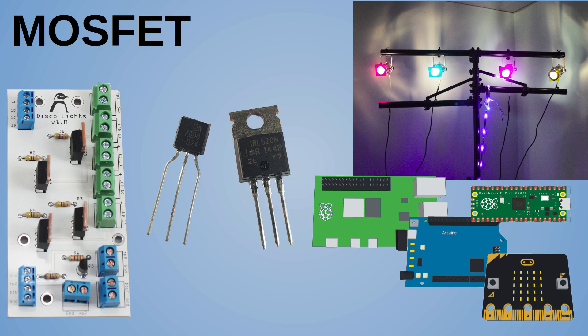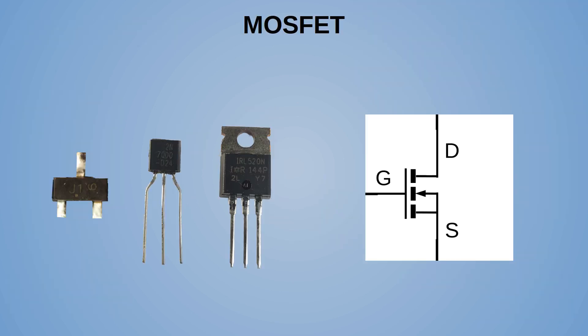The MOSFET and other FET technologies are more widely used than the bipolar transistor, both in integrated circuits and as a discrete component. In this video I'll give some example uses of the MOSFET and how it can be used as a digital switch to turn on large loads. This shows some example MOSFETs along with the circuit symbol. The MOSFET's three pins are labeled D for drain, G for gate, and S for source — roughly equivalent to the collector, base, and emitter on the bipolar junction transistor.